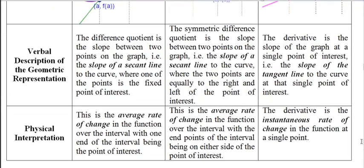When we do this physically in context, a physical, maybe I could say contextual interpretation, it is the average rate of change in the function over the interval, with one end of the interval being the point of interest. That is for the difference quotient. The symmetric difference quotient is the average rate of change in the function over the interval, but the end points of the interval on either side of the point of interest.